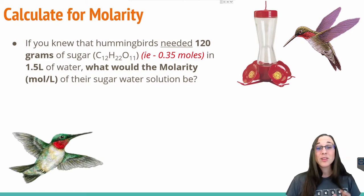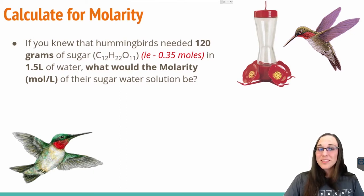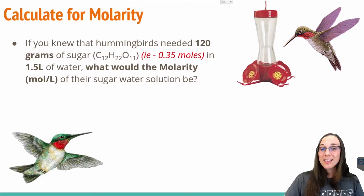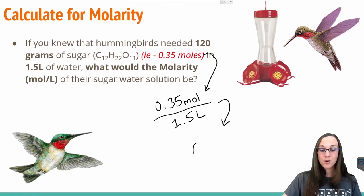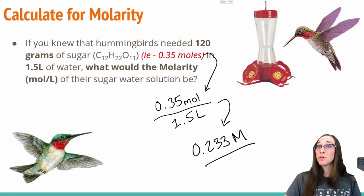I already went through the hassle of converting those grams to moles for you using molar mass in order to determine that there are 0.35 moles in 120 grams of sugar. If we want to know the molarity, that's simply the moles per liter. We already said we have 0.35 moles and we have 1.5 liters. So dividing those two values, I end up with a molarity of 0.233 molar, which we represent with a big M, or moles per liter.